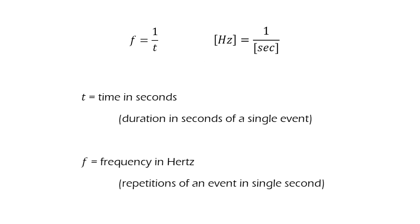Frequency is the inverse of time, mathematically as well as conceptually. Time tells us how many seconds it takes for something to happen once, while frequency tells us how many times something happens or repeats in a single second.